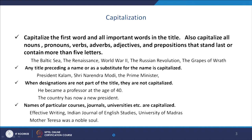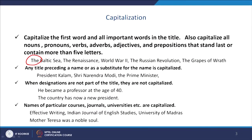Also capitalize all nouns, pronouns, verbs, adverbs, adjectives, and prepositions that stand either last or contain more than five letters. Look at some examples: 'The Baltic Sea,' 'The Renaissance,' 'World War Second,' 'The Russian Revolutions' — all these are names and that is why they have been capitalized. But look at the last title: 'The Grapes of Rot' — here we have capitalized all words except 'of,' because it is in the midst of the words and that is why it has not been capitalized.